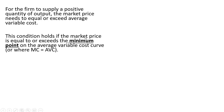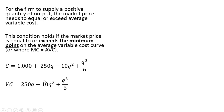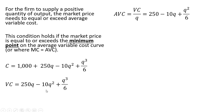For the firm to supply a positive quantity of output, the market price needs to equal or exceed the average variable cost. This condition holds if the market price equals or exceeds the minimum point on the average variable cost curve. From our cost equation, 1,000 is fixed cost — everything else is variable cost. To get average variable cost, we divide variable cost by q: 250q divided by q is 250, minus 10q squared divided by q leaves minus 10q, and the last term divided by q gives q squared divided by 6. That is average variable cost.